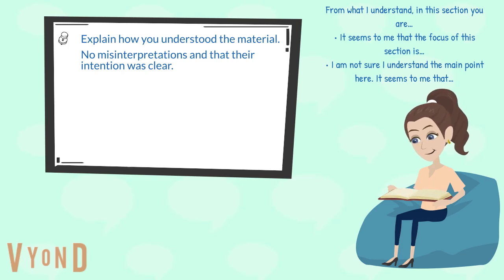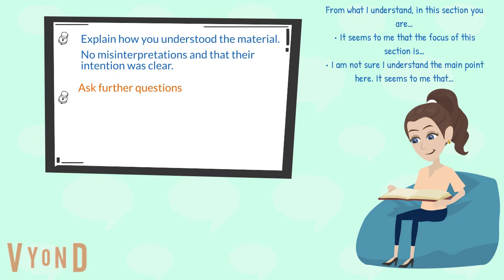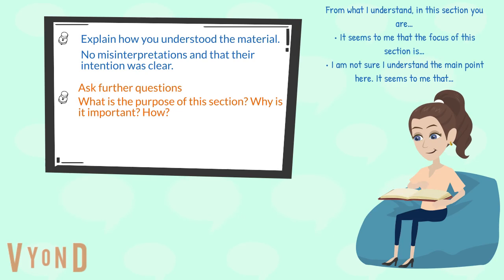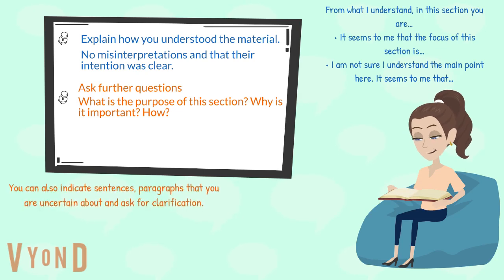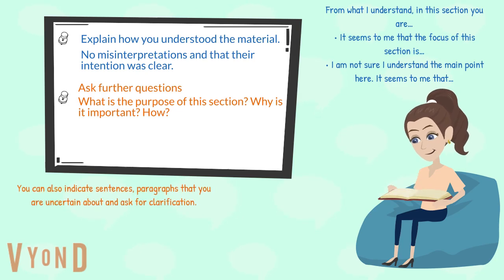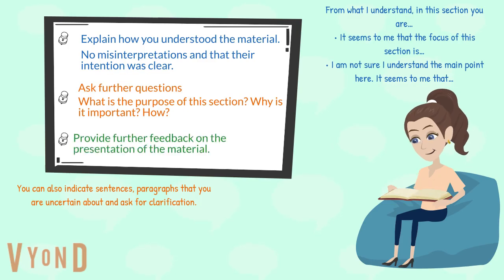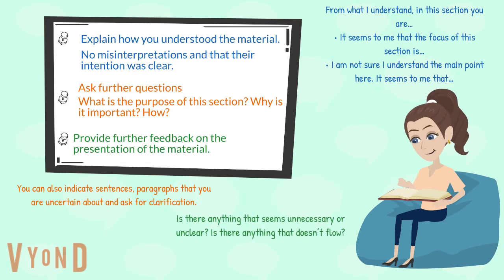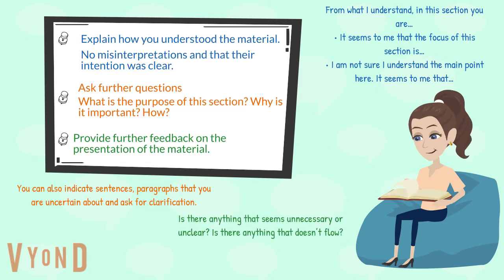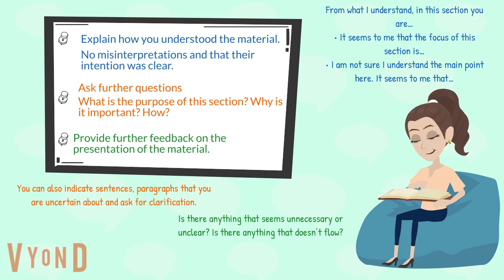After indicating your understanding, you will know if that was the original intention. If not, then ask further questions to help the author articulate their meaning, such as: 'What is the purpose of the section? Why is it important?' You can also indicate sentences or paragraphs that you are uncertain about and ask for clarification. Finally, you can provide further feedback on the presentation of the material — is there anything that seems unnecessary or unclear? Is there anything that doesn't flow? Maybe indicate arguments that seem weak.